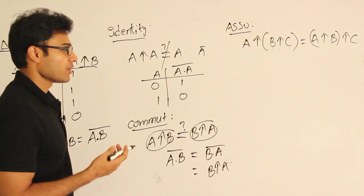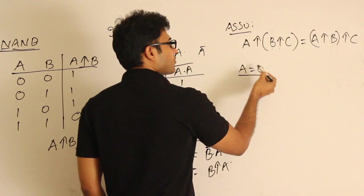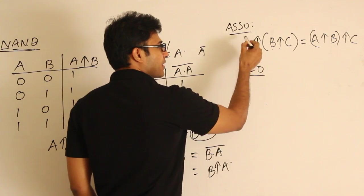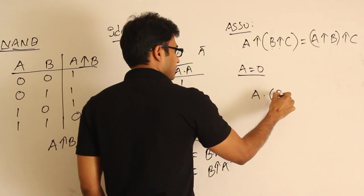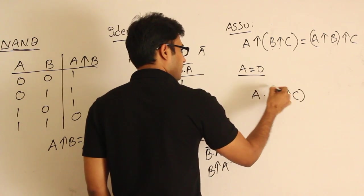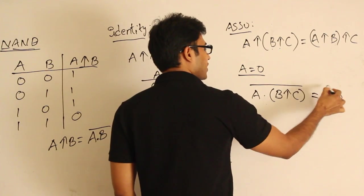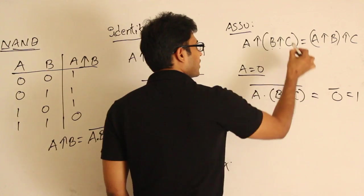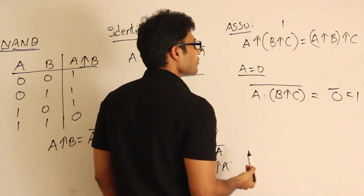So if I put A=0, this entire thing is nothing but A and something, complemented. If I put A=0 directly, what you get is this entire thing is 0, and therefore it is 1. So the left-hand side becomes 1. Now if I put A=0 here, let's see what happens.